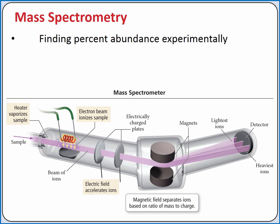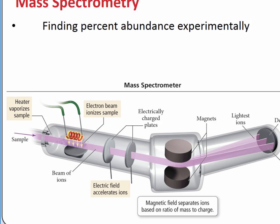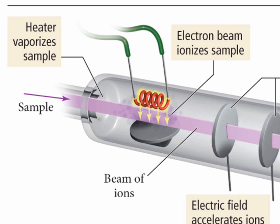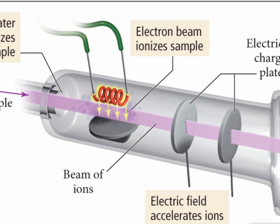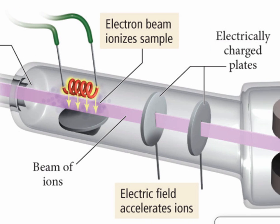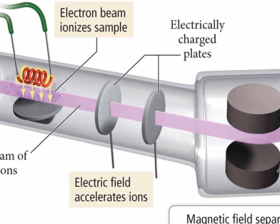We can experimentally determine the natural abundance of each isotope for an element using mass spectrometry. In mass spec, the sample is heated until it's vaporized — that is, turned into a gas. Those gaseous atoms are then ionized using an electron beam, so they have a net charge. These ions are then accelerated using an electric field.